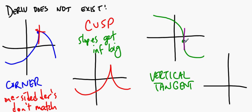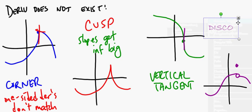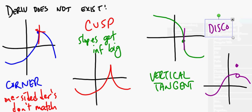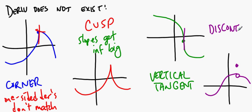And then fourthly is the case of a discontinuity. With a discontinuity, you can't have a derivative if you can't draw a tangent line. You can't draw a tangent line where there is no place to draw the tangent line.